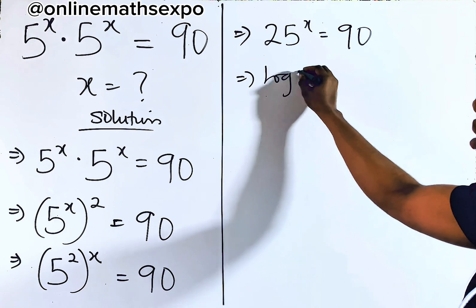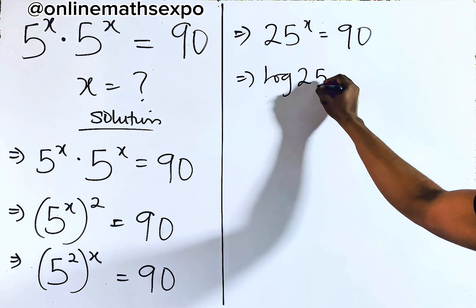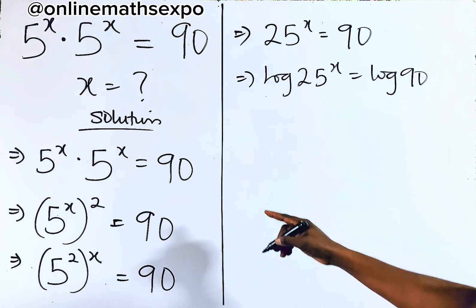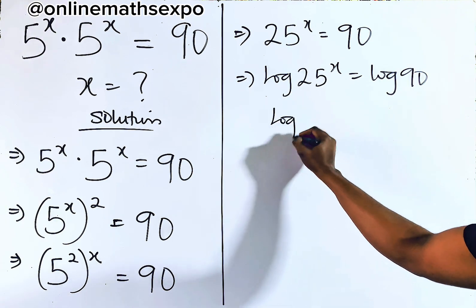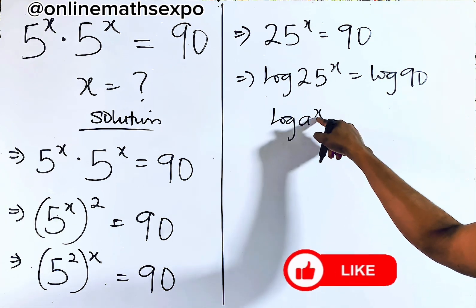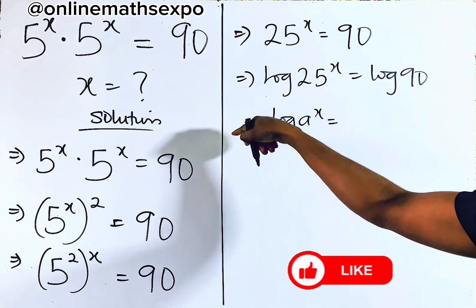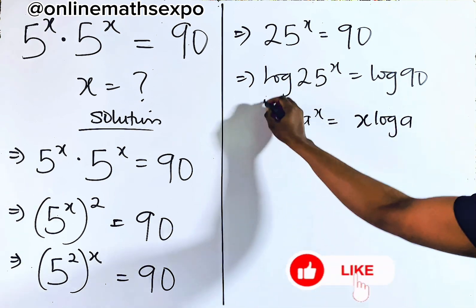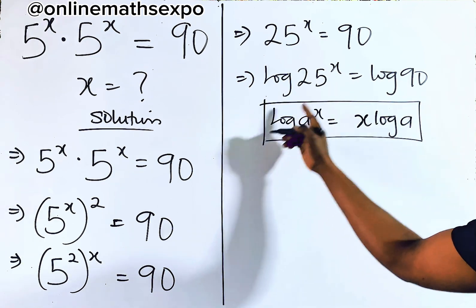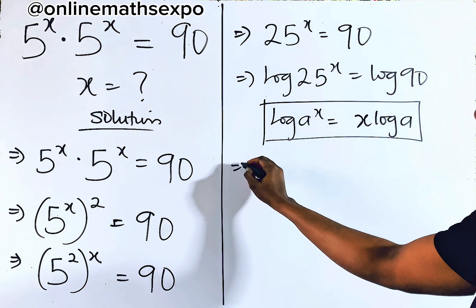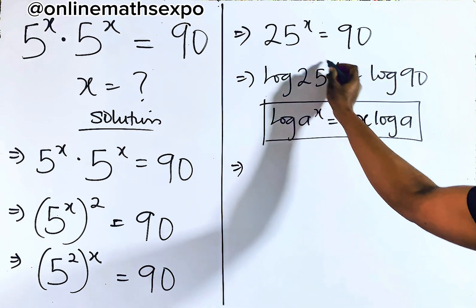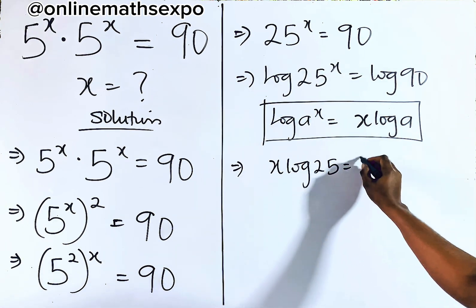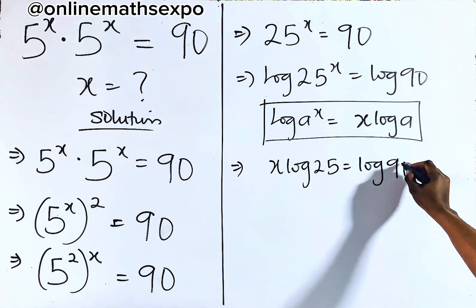At this point, you take the log of both sides so as to find x. Remember, for every log of a to the power of x, the power multiplies, so it gives us x log a. Applying it on the left side, this power multiplies, so we have x log 25 is equal to log of 90.